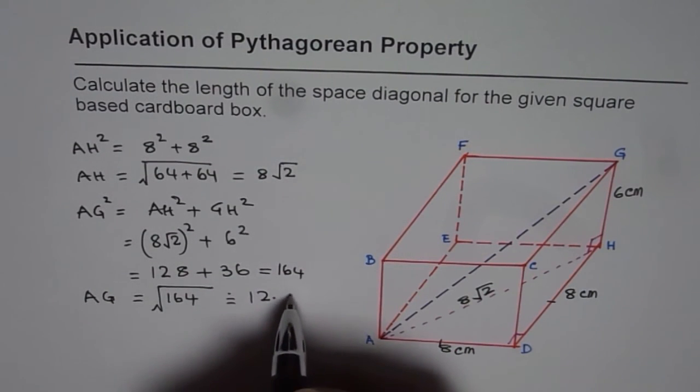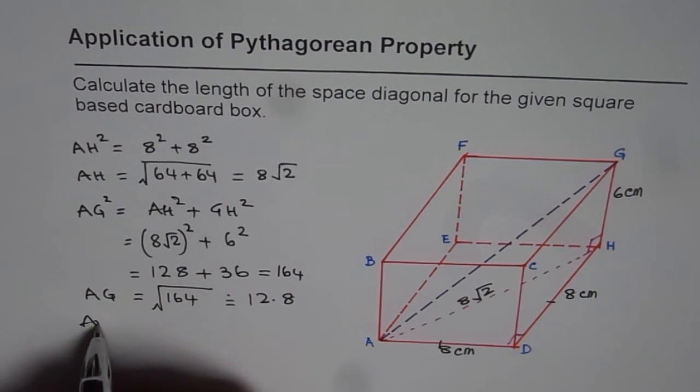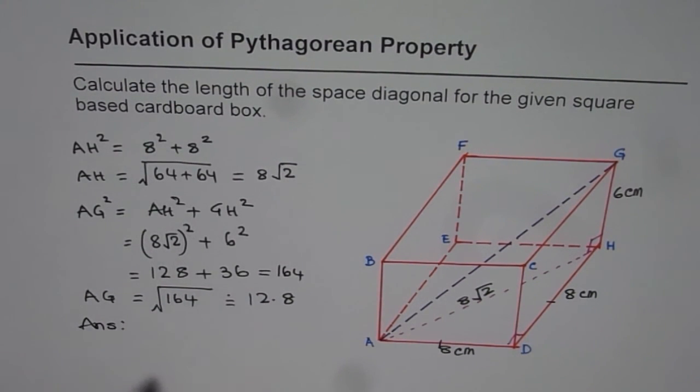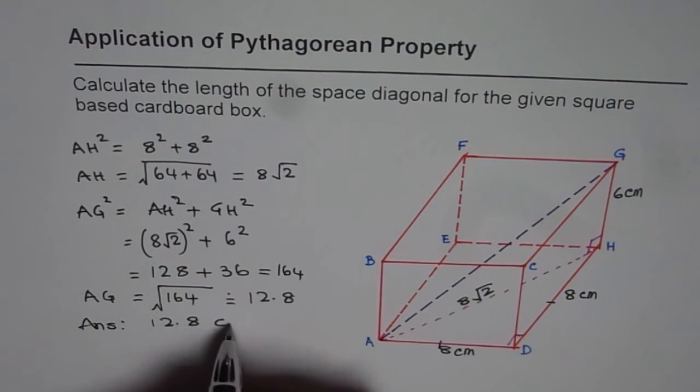Approximately 12.8. Since the units are in centimeters we can say our answer is: the space diagonal is equal to 12.8 centimeters.